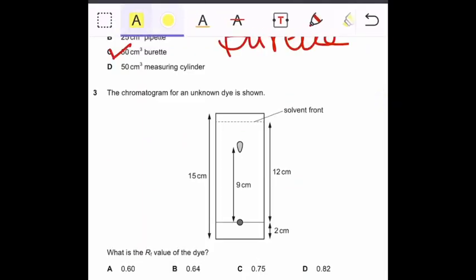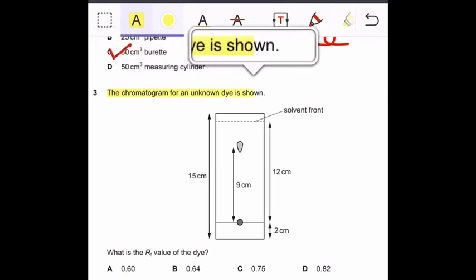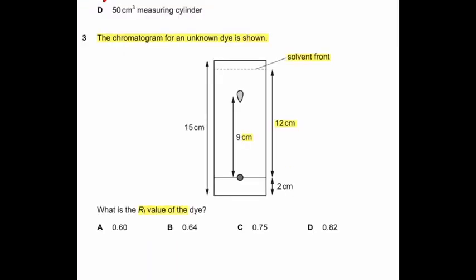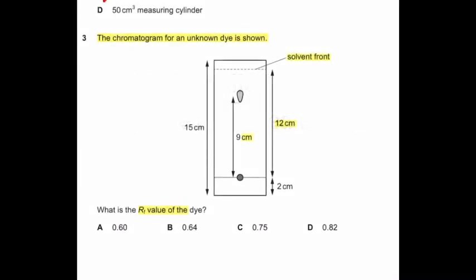Question number 3: The chromatogram for unknown dye is shown. Solvent front. The distance travelled by solvent front is 12 centimeters and this is the spot of dye and distance travelled by spot of dye is 9 centimeters. What is the RF value of the dye? How to calculate RF value? Distance travelled by component divided by distance travelled by solvent. The distance travelled by dye divided by distance travelled by solvent front. So correct answer is C, 0.75. RF value has no unit.